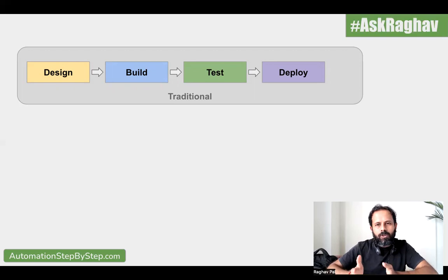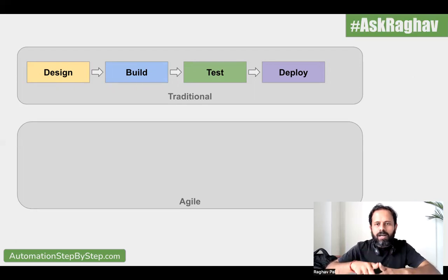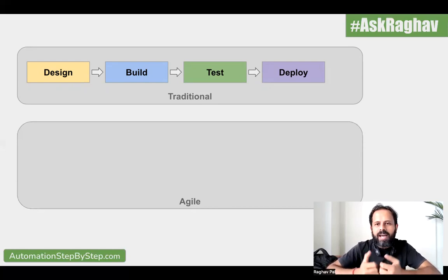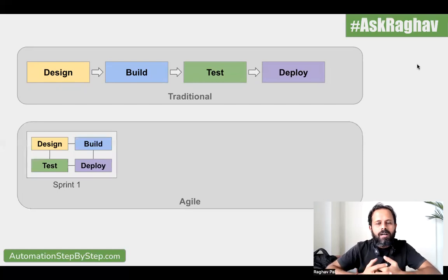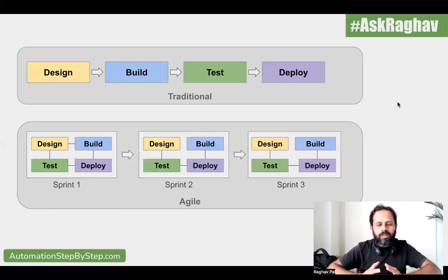The dev team would only do development and it was an isolated team. The QA team would only do testing and it was also a separate isolated team. However, now with Agile methodology, we have sprints. It is not like we take all the requirements at once and then develop, deploy, and release the complete product. We divide the requirements and have sprints, taking some requirements and some user stories in each sprint. Every sprint has its own design, build, testing, and deployment phases, and we have multiple sprints.